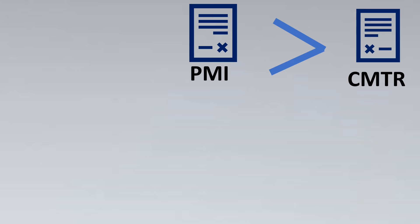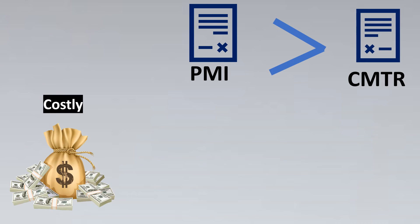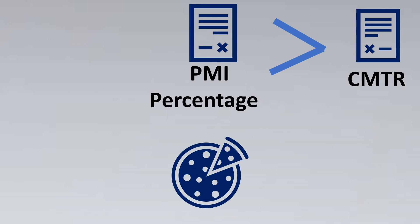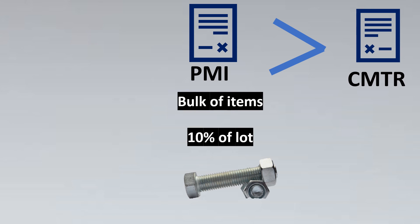Is PMI greater in scope than CMTR or the material certificate? With respect to cost, PMI is far more expensive than the material certificate. For that reason, sometimes a special consideration is made: only a percentage of a lot is checked via PMI, especially for bulk items. For example, for studs, bolts, and similar bulk items, you might check just 10% of the lot — only a random 10% sample is tested.